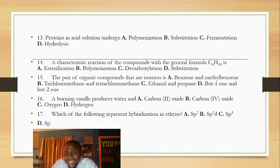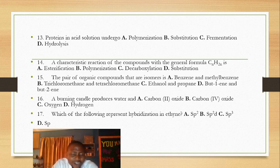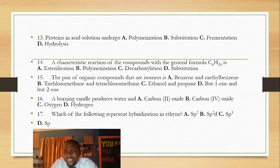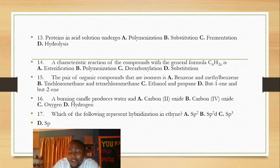Question 14: the characteristic reaction of the compound with general molecular formula CₙH₂ₙ — that is an alkene. Alkene usually undergoes addition and polymerization. The answer is polymerization. Acidification is characteristic of alkaline acids; substitution is characteristic of saturated organic compounds like alkanes.